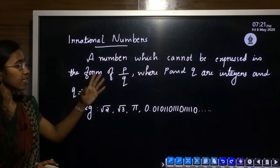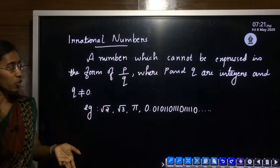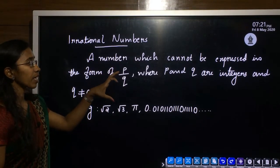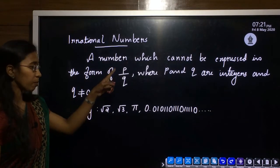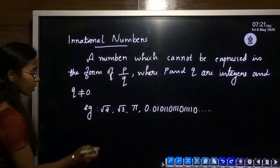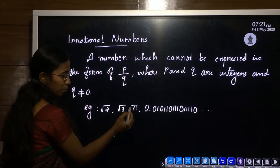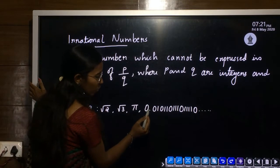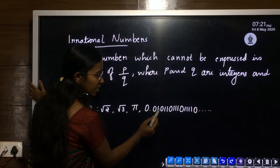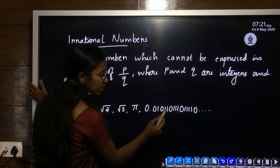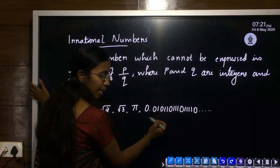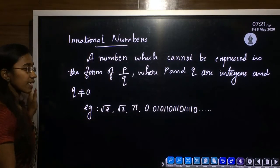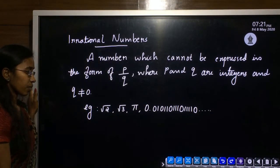Irrational numbers are just the opposite of rational numbers — a number we cannot express in the form of p by q. For example, root 2, root 3, pi, and numbers like 0.01011... — these kinds of numbers are called irrational numbers.